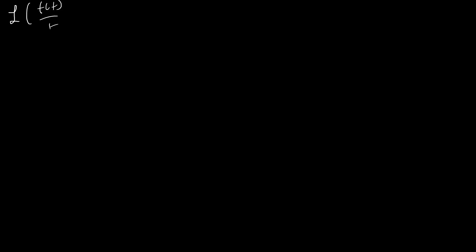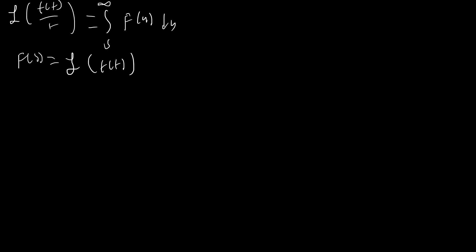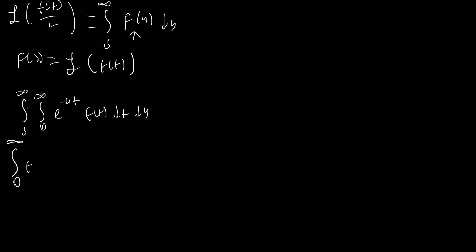The first thing we're going to do is prove that the Laplace transform of f(t) over t equals the integral from s to infinity of F(u) du, where F(s) equals the Laplace transform of f(t). This is going to be pretty useful because we can apply this twice to pretty basic functions, since we have t squared on the bottom. So we start with the integral from s to infinity of the integral from zero to infinity of e to the negative ut, times f(t), dt du. We exchange the order of integration and bring f(t) to the outside, since f(t) is constant with respect to u.